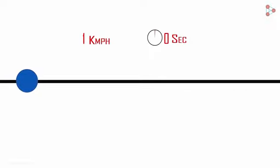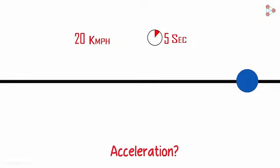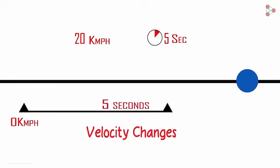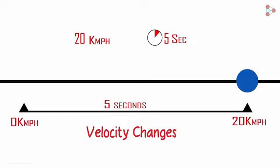Let's say a body moves from rest and reaches a velocity of 20 kilometers an hour in 5 seconds. Will acceleration be involved here? Yes, because the velocity is changing. It was zero initially and at the end of 5 seconds, it's 20 kilometers per hour.